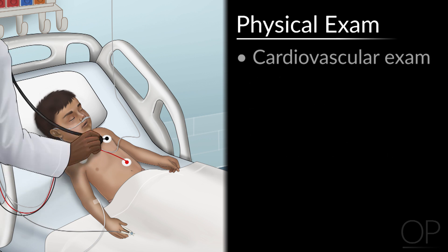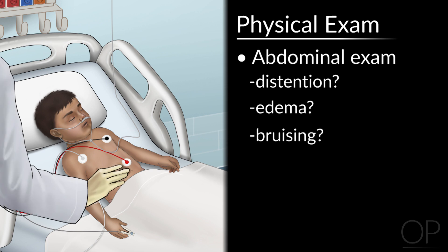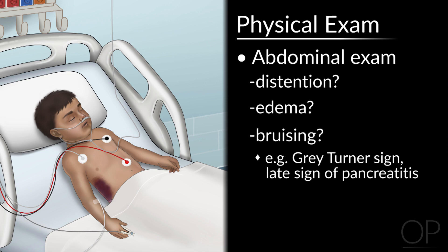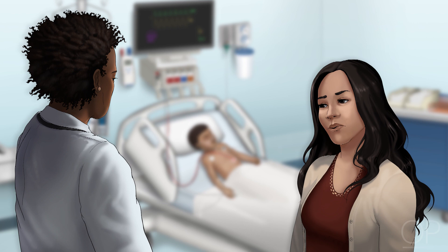On cardiovascular exam, are they tachycardic? On the abdominal exam, does the patient have distension, edema, or bruising? A Gray Turner sign is often a late sign of pancreatitis. If there is family in the room, some of the information you want to gather related to a possible diagnosis of acute pancreatitis includes finding out if there is any possible trigger for the episode.